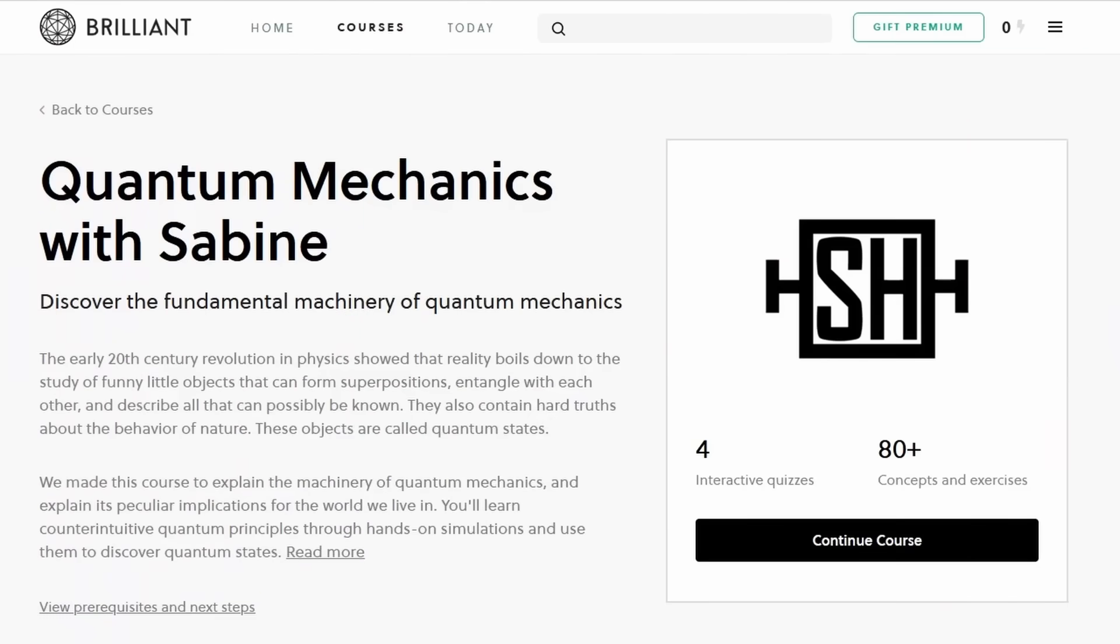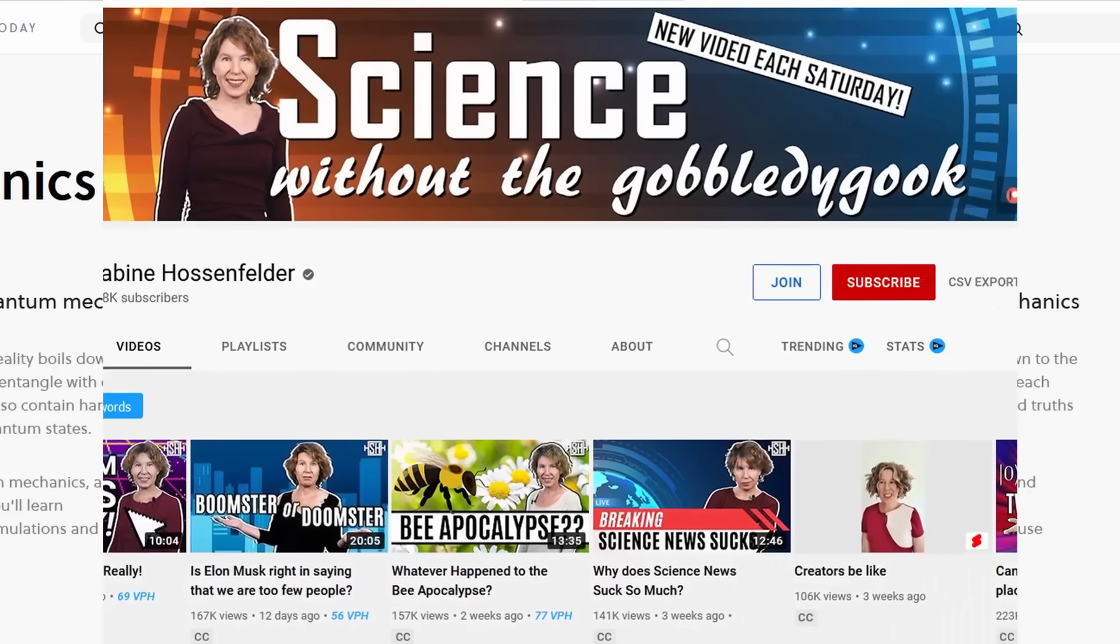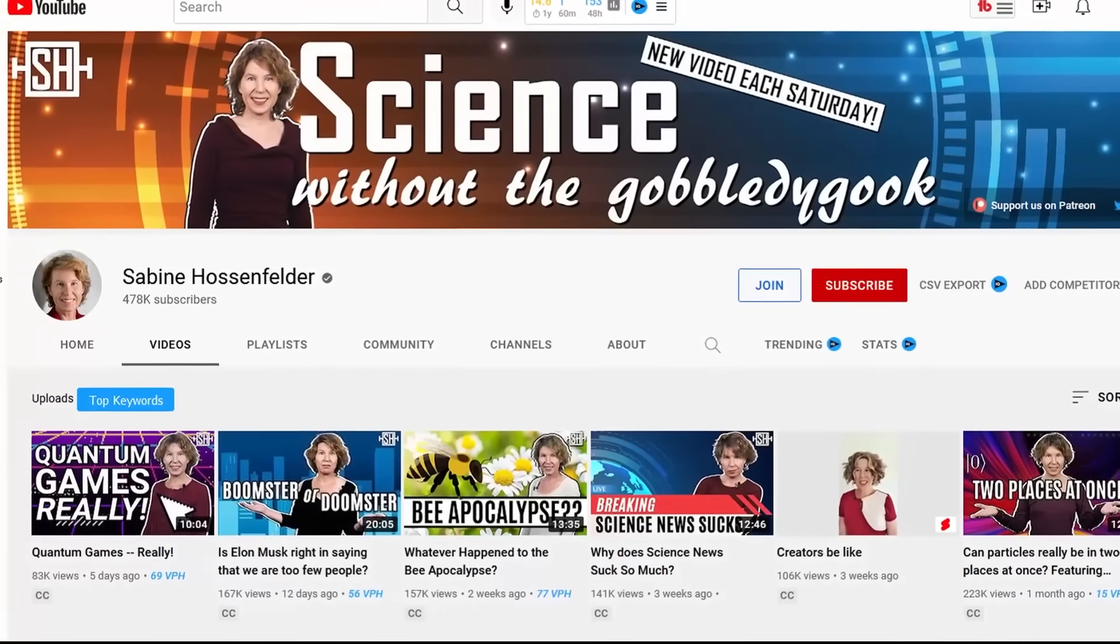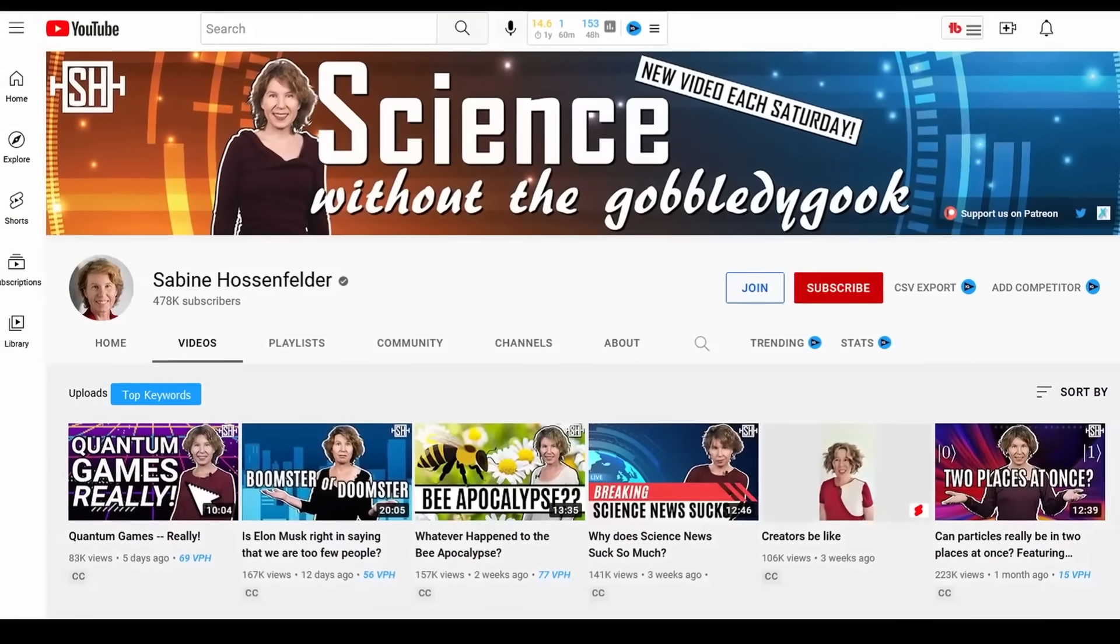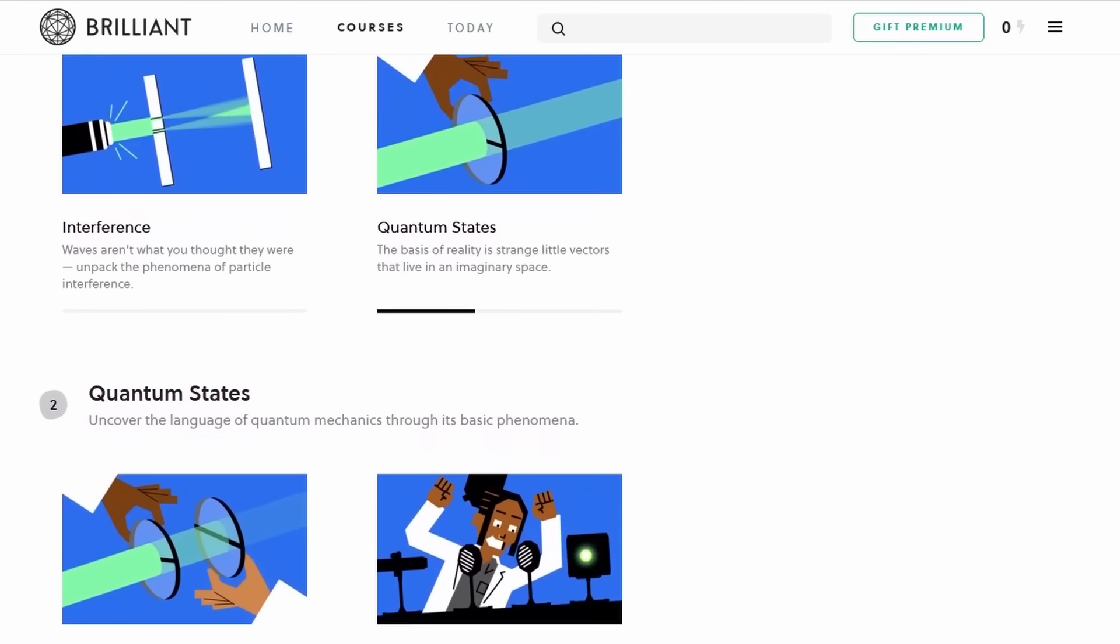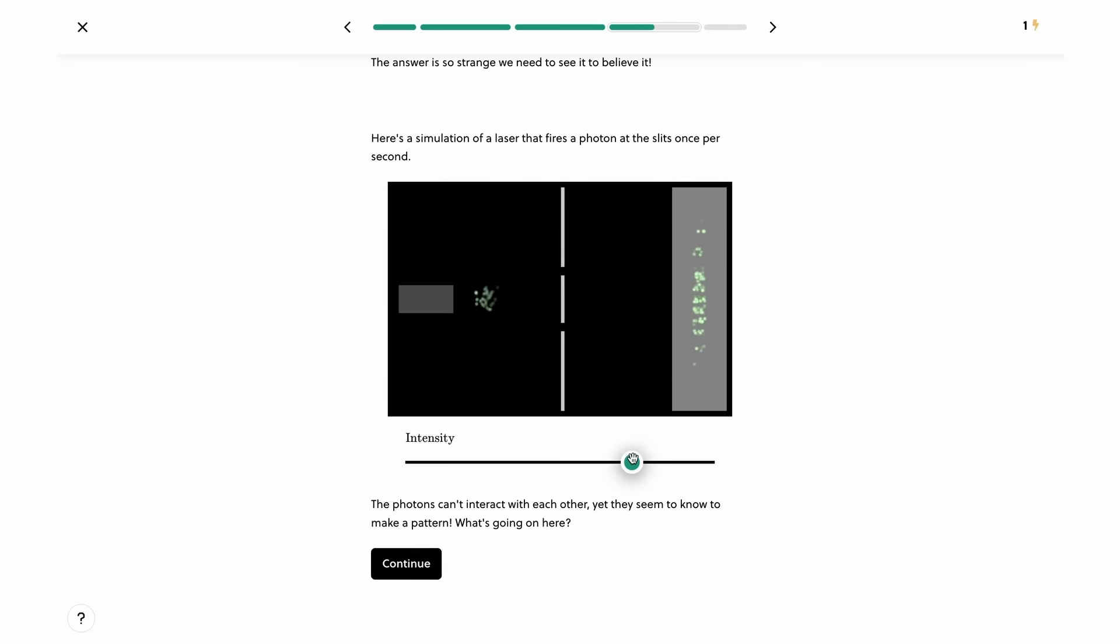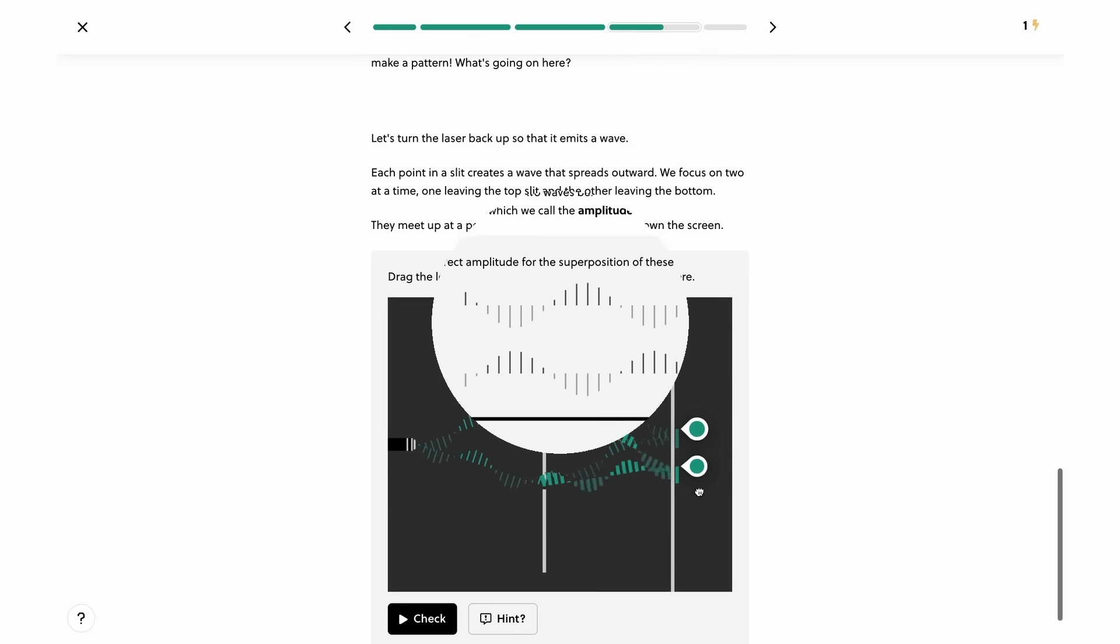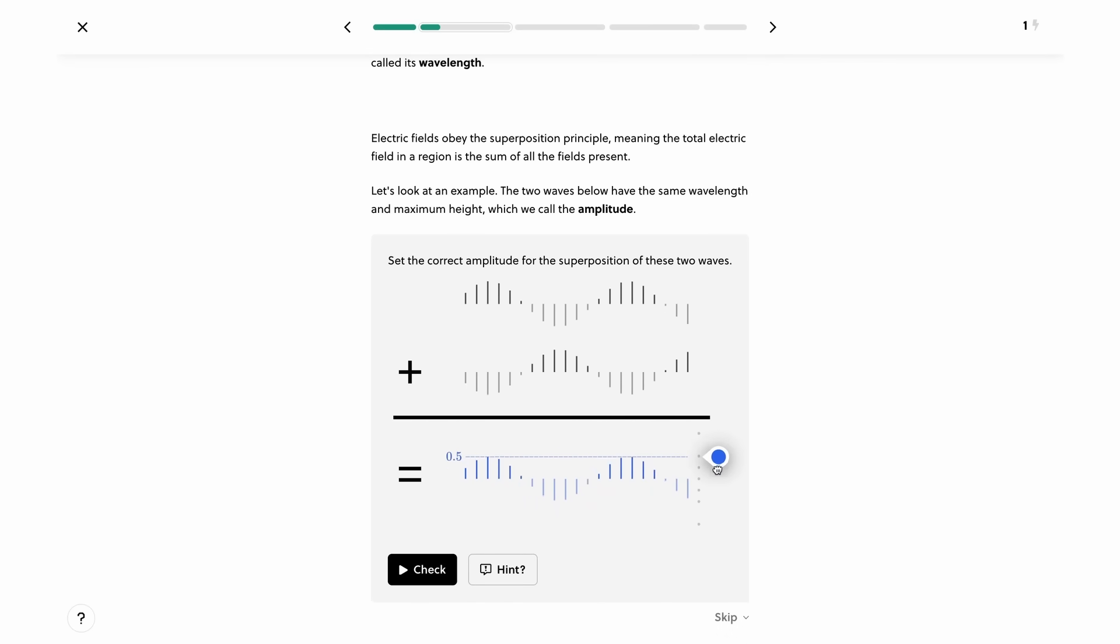And Brilliant, our sponsor today, makes that process simpler. One of their exceptional new courses is called Quantum Mechanics with Sabina. This course, created with the collaboration of physicist, fellow YouTuber, and friend, Sabina Hassenfelder, teaches the counter-intuitive machinery of quantum mechanics by using hands-on simulations, interactive quizzes, and visual demonstrations. It's a great, fun way to learn a normally very difficult subject.